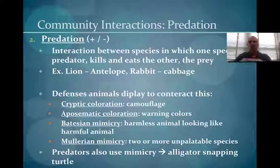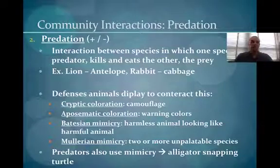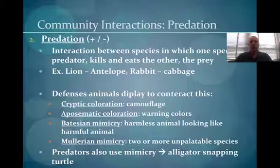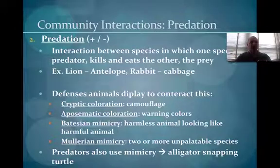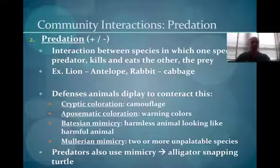Aposematic coloration involves warning colors. It doesn't do you any good to get eaten and then have the predator realize you're poisonous — so having bright warning colors is one defense mechanism. Batesian mimicry is when harmless animals look like more harmful animals; for example, a butterfly that looks like a monarch butterfly won't be eaten because predators know the monarch is distasteful. Mullerian mimicry is when two or more animals that are both harmful and unpalatable share the same coloration, increasing the number of similarly colored prey and reducing the likelihood that any individual is eaten.